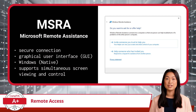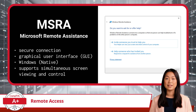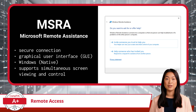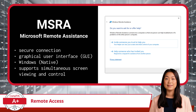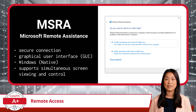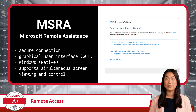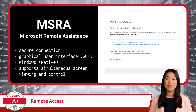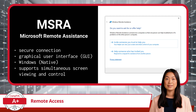Need to assist someone with troubleshooting? Microsoft Remote Assistance, or MSRA for short, allows users to invite others to view or control their desktop in a collaborative, real-time session. This tool creates a secure, encrypted connection and requires the user to initiate the session, ensuring control and privacy. Available on Windows, MSRA is great for helping colleagues, customers, or even friends with technical issues.